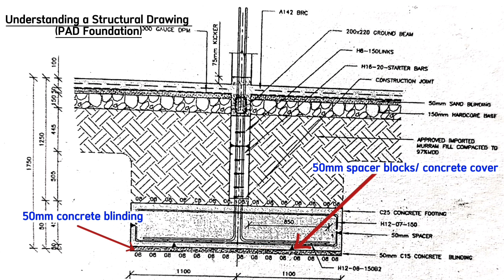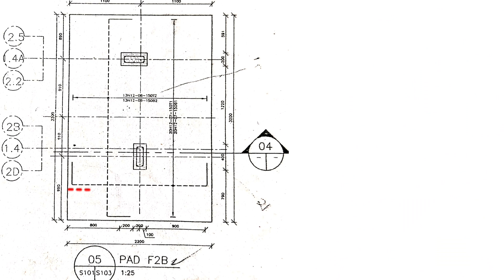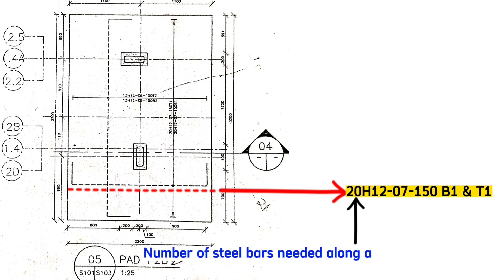After the spacer blocks, we have steel bars for the pad footing. Along this shorter side, the drawing details that we shall have 20 steel bars of H12 with code 7 and spacing as 150 millimeters for bottom one and top one. This first figure 20 here always shows us the number of steel bars we are supposed to have along a given length.